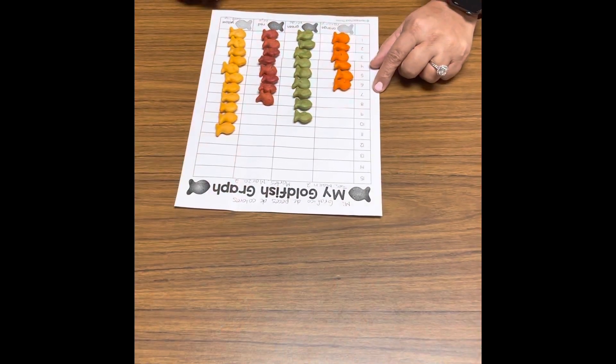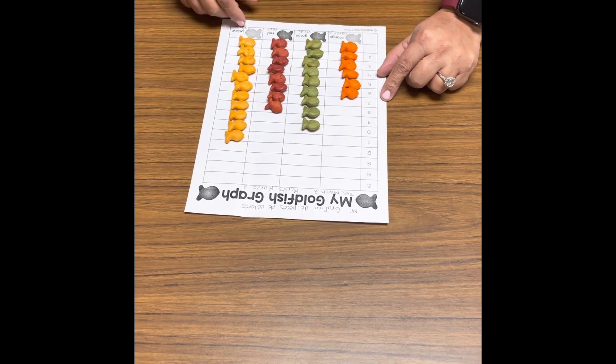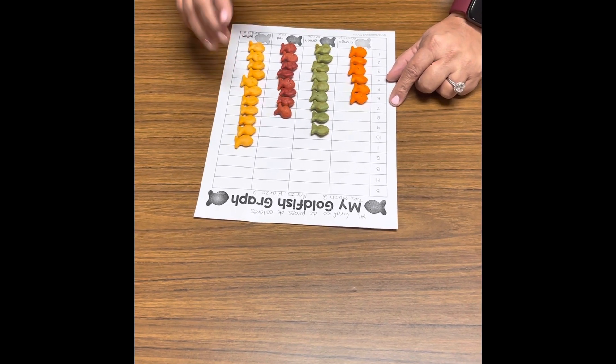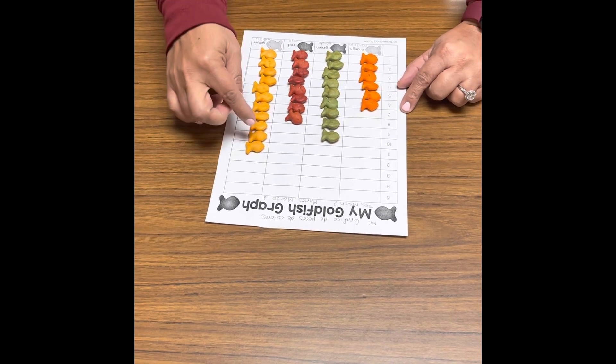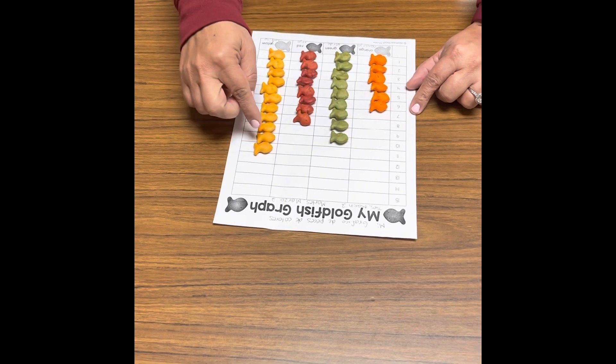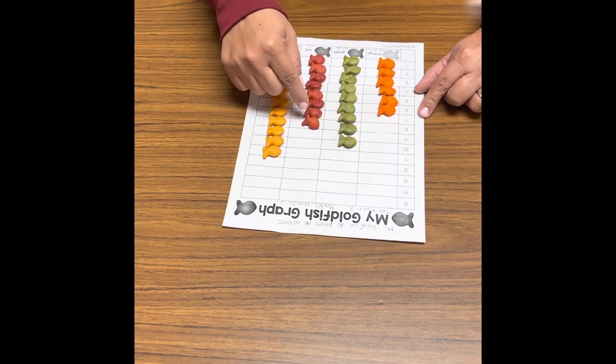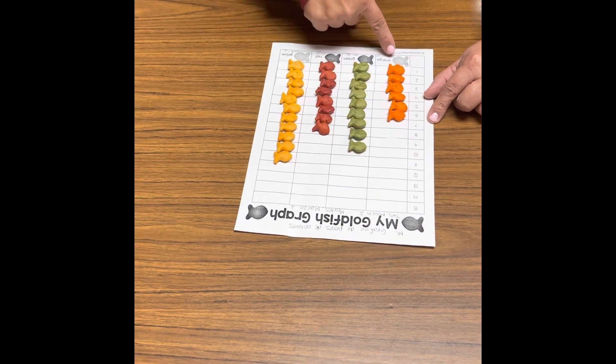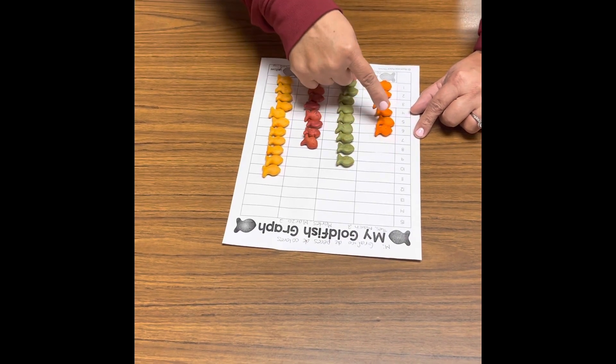Okay, ya tenemos los pescados clasificados por líneas y por colores. Ahora vamos a ver cuál de las líneas es la más que tiene y cuál es la menos que tiene. La amarilla es la más larga porque tiene 11 pescados. La roja tiene 8 pescados, la verde tiene 10 pescados, y la anaranjada solo tiene 7 pescados.